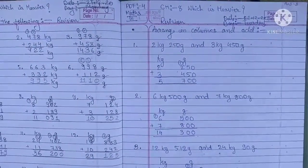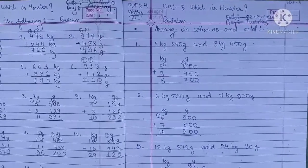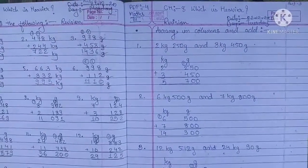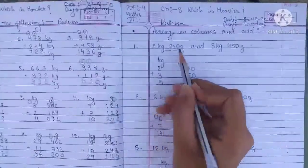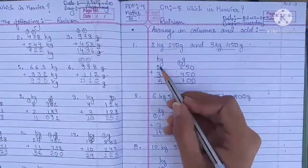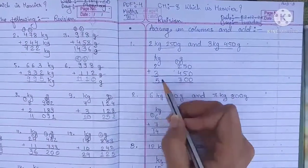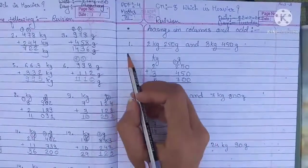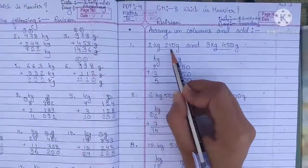Hey everyone, welcome back. Today's question is arrange in columns and add. We have some units and weights. First we have to arrange in columns and then add.